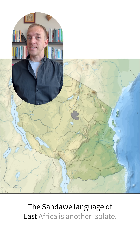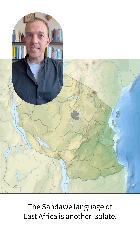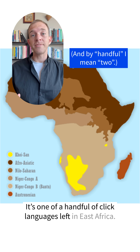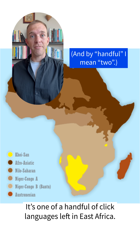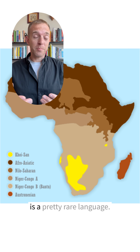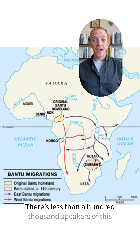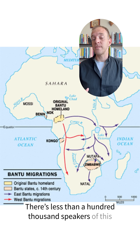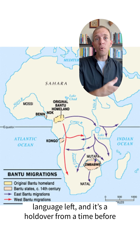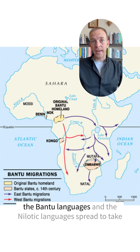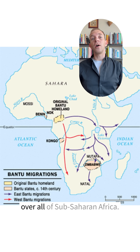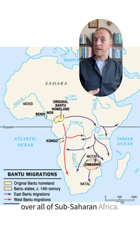The Sendawai language of East Africa is another isolate. It's one of a handful of click languages left in East Africa — most click languages are in South Africa, so this is a pretty rare language. There are fewer than 100,000 speakers left, and it's a holdover from a time before the Bantu and Nilotic languages spread to take over all of sub-Saharan Africa.